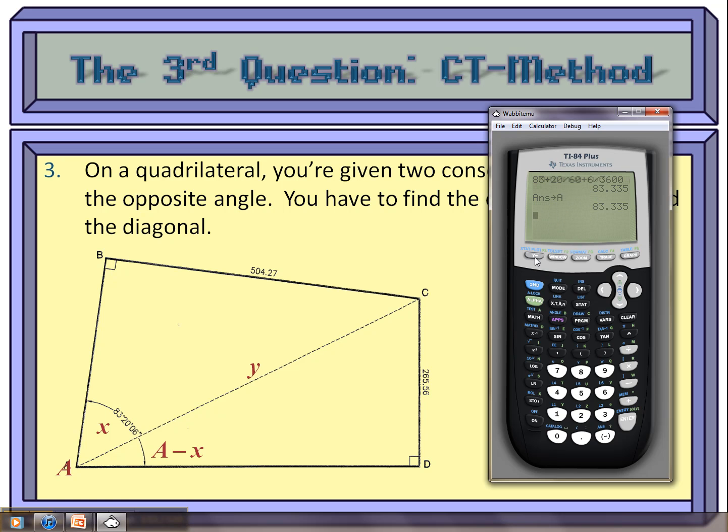Okay, so I need to type in my two equations. Y equals, the first one is the top, which is 504.27, divided by the sine of X. For the second one it's the right-hand side, 265.56, divided by the sine of A minus X.